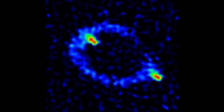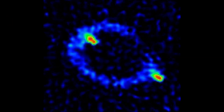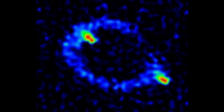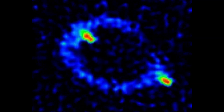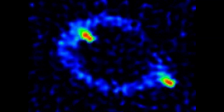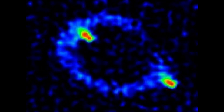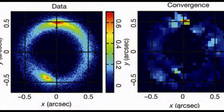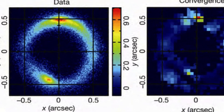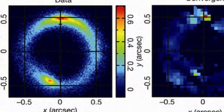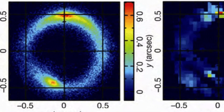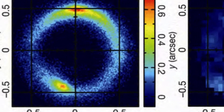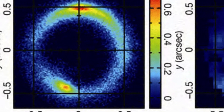The first Einstein ring was discovered by Hewitt et al., 1988, who observed the radio source MG 1131+0456 using the Very Large Array. The first complete Einstein ring to be discovered was B1938+666, which was found by King et al., 1998, via optical follow-up with the Hubble Space Telescope of a gravitational lens imaged with Merlin.